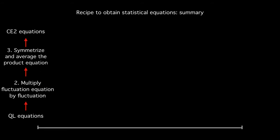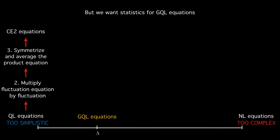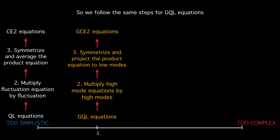So just to repeat, we started with QL equations, did a few steps of the recipe, and ended up with CE2. But we know that QL dynamics were too simplistic, and we wanted to be in the habitable zone where GQL equations reside. So we follow the same steps of the recipe, but start with GQL to end up with the generalized CE2, GCE2 equations.